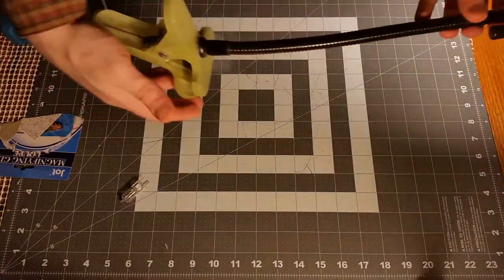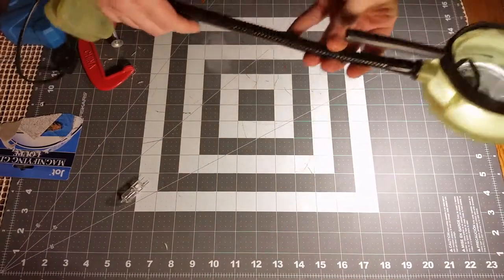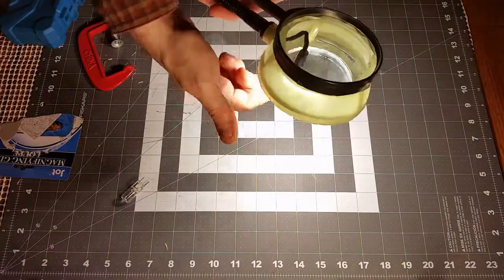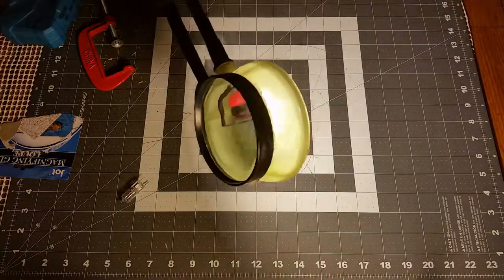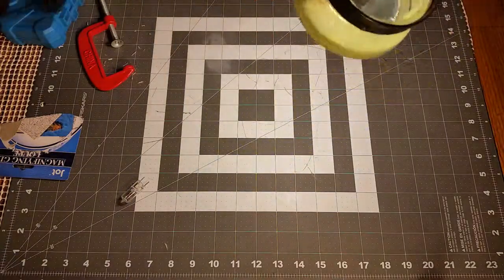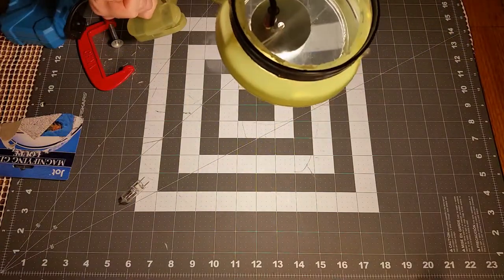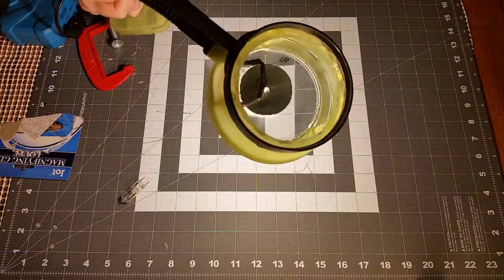I paid three dollars for the assembly here from Goodwill, a dollar for the light, and a dollar for the magnifying glass. So, five dollars. Nice little setup here to magnify and light up whatever I'm soldering.